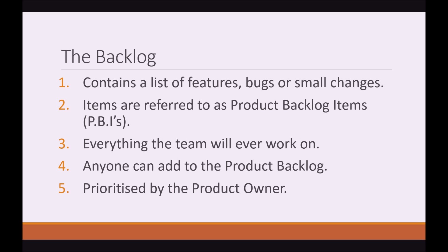So the Backlog. The Backlog contains a list of features, bugs, or small changes. Items here are referred to as Product Backlog Items, or PBIs. This list contains everything the team will ever work on. Anyone can add an item to the Product Backlog.